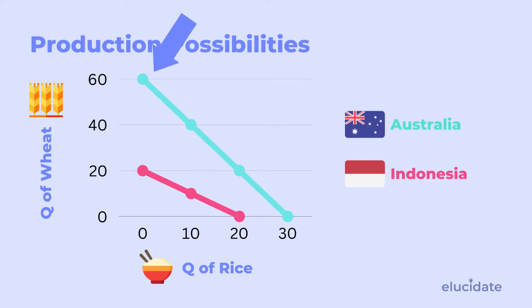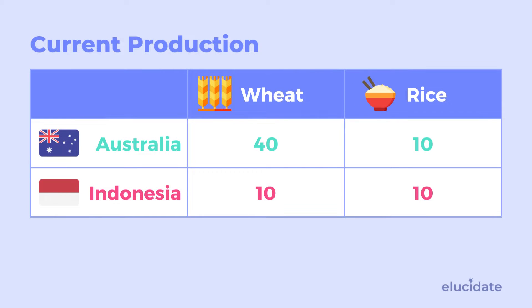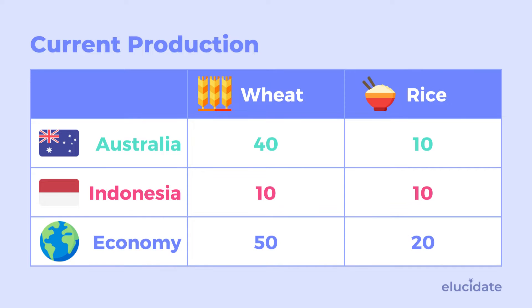If we put their production possibilities on the chart, we can see that the more Australia produces of wheat, the less it produces of rice, and the same applies to Indonesia. If we choose any point on this line as our current production, Australia is producing 40 wheat and 10 rice, and Indonesia is producing 10 rice and 10 wheat. So in total, our economy has 50 wheat and 20 rice — that is our current economic situation.